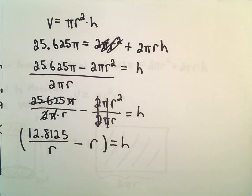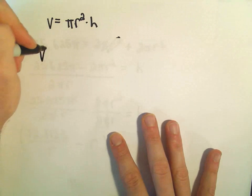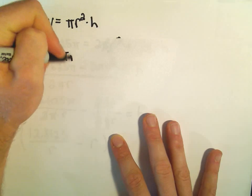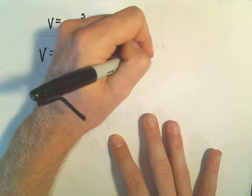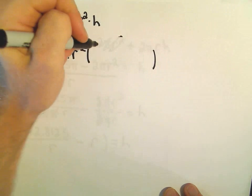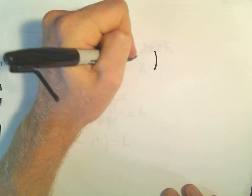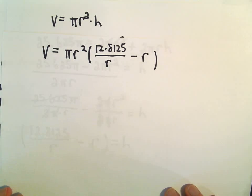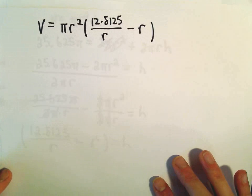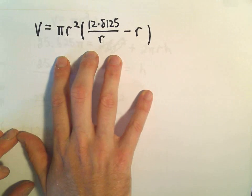And now I'm just going to take this and plug it back into the volume formula. So it says the volume will be π times R² times H, which we said was 12.8125 all over R minus R. So okay, now I've finally got our equation down to a single variable. So this is where we can take the derivative.